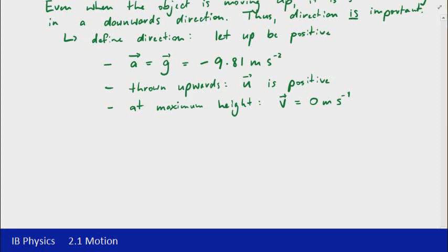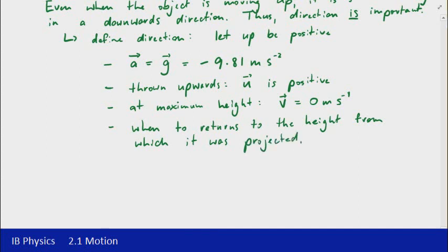And finally, another useful point to note, when the object returns to its original height, or the height from which it was projected, we can go through and show that the final velocity is going to be equal to the negative of the initial velocity, so it has the same speed but it's now in the opposite direction. And also associated with that, if it's returned to the same height, then its vertical displacement will be 0 meters as well.